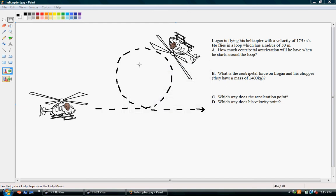Hey, guys. Okay, so here we have ourselves a centripetal acceleration problem, where we're going to be calculating centripetal acceleration and centripetal force. So, Logan is flying his helicopter with a velocity of 175 meters per second, and he flies in a loop which has a radius of 50 meters.